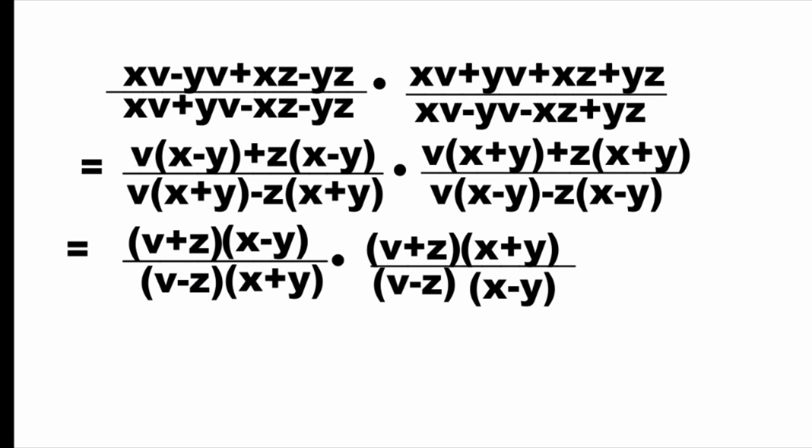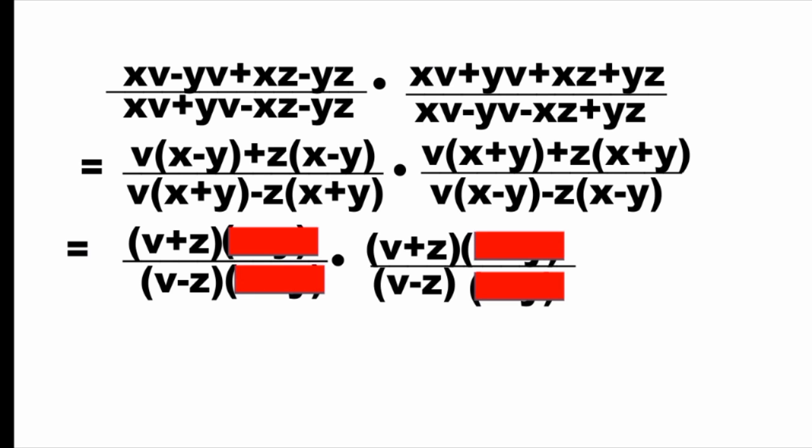Here, you can easily identify common factors that can be cancelled. You can cancel x minus y on the first numerator and in the second denominator and x plus y in the first denominator and in the second numerator.